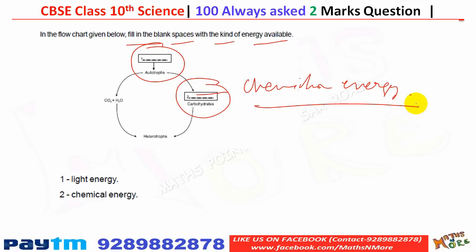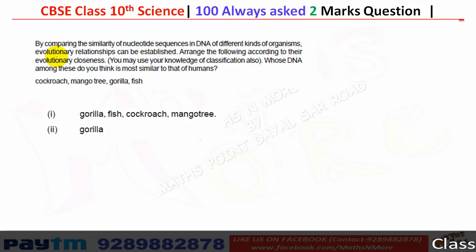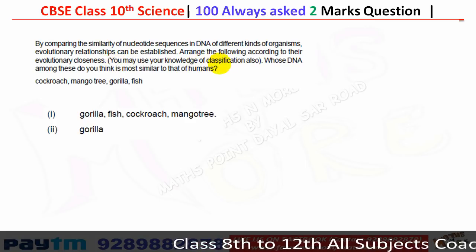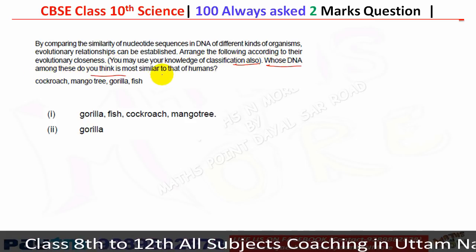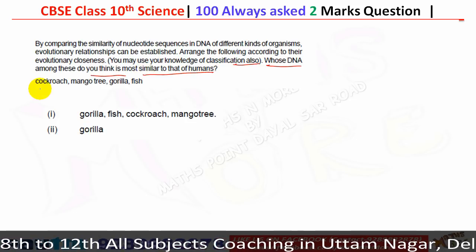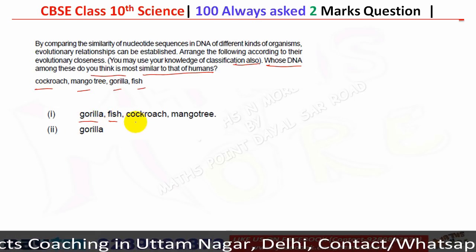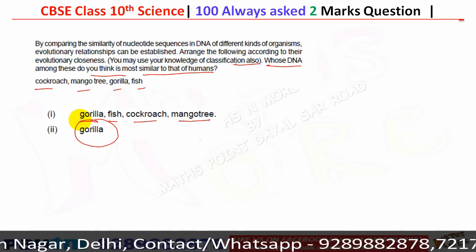Evolutionary relationships can be established by comparing the similarity of nucleotide sequences in DNA of different organisms. Arranging the following by evolutionary closeness to humans — cockroach, mango tree, gorilla, fish — the order is: gorilla, then fish, then cockroach, then mango tree. Gorilla's DNA is most similar to that of humans.